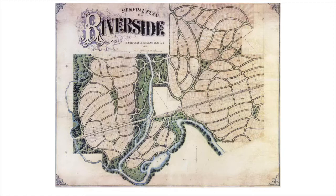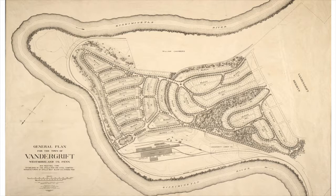He also did some town designs. This is a plan he did with Calvert Vaugh for the town of Riverside, Illinois, just outside of Chicago, which was actually built — you can look it up on Google Maps. And here, the town of Vandergrift in Pennsylvania, which was commissioned by the Apollo Iron and Steel Company, which acquired land and wanted to build a neighborhood for employees coming to work at their steel plant.